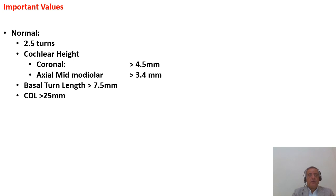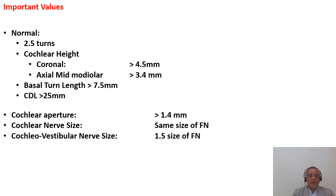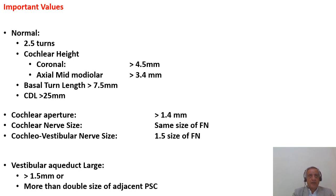Important normal values to remember: cochlea should be 2.5 turns; cochlear height in coronal more than 4.5 mm; axial mid-modular 3.4 mm; basal turn length more than 7.5 mm; cochlear duct length more than 25 mm. Cochlear aperture 1.4 mm; cochlear nerve same size as facial nerve; cochlear-vestibular nerve at least 1.5 times the size of the facial nerve. Vestibular aqueduct 1.5 mm diameter and more than double the adjacent posterior semicircular canal.